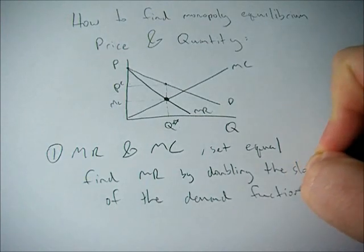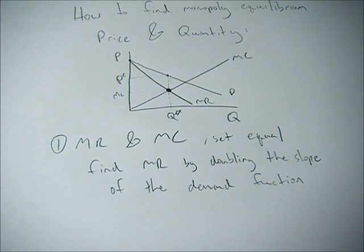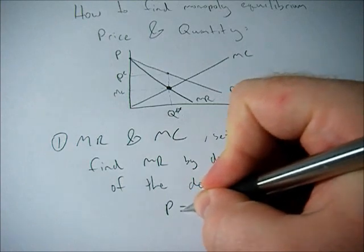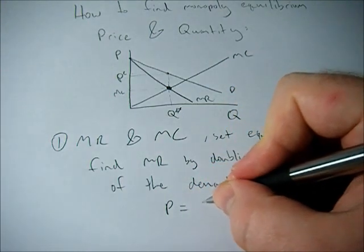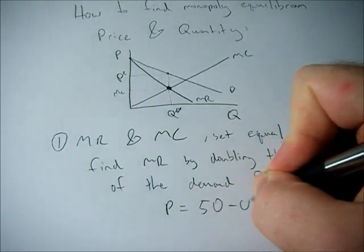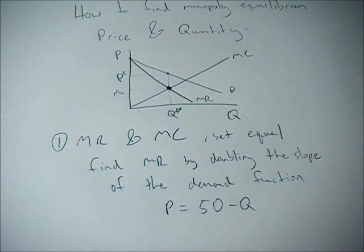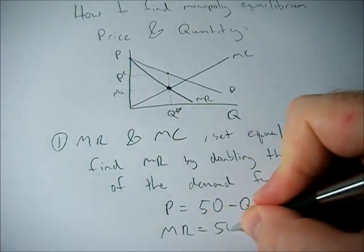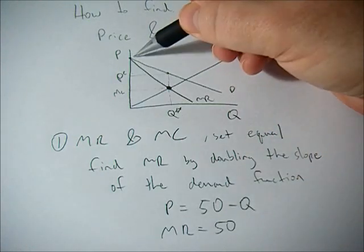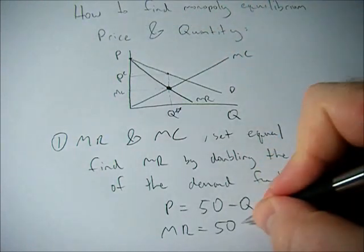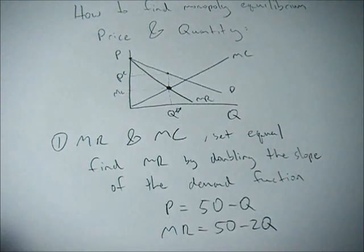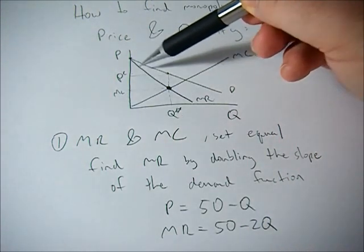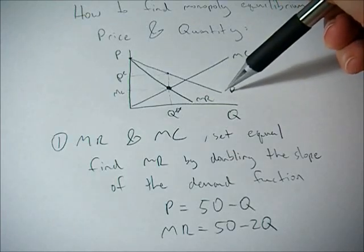So for example, if your demand function or inverse demand function were P = 50 minus Q, your marginal revenue function would be 50, so the same intercept, note the same intercept, minus 2Q. So it has double the slope that the demand curve has.